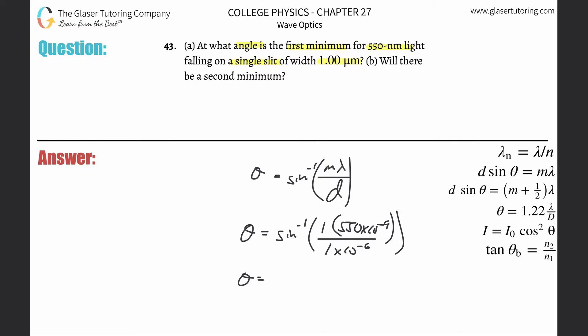So inverse sine, make sure your calculator is in degree mode. So 550 multiplied by 10 to the minus ninth divided by one times 10 to the minus sixth. And we get an answer about 33.4, so 33.4 degrees.